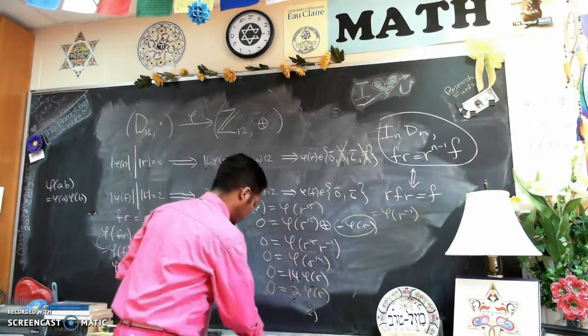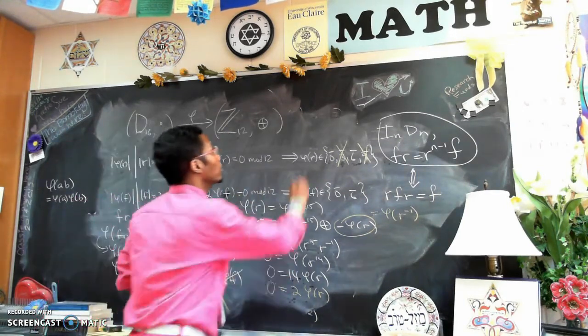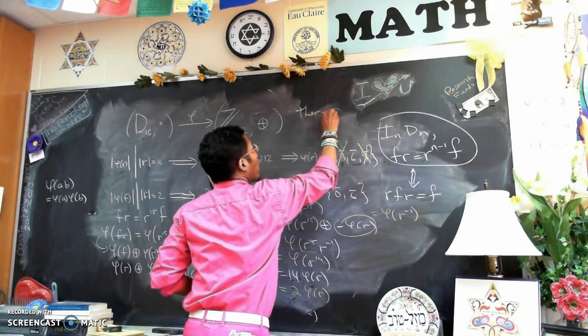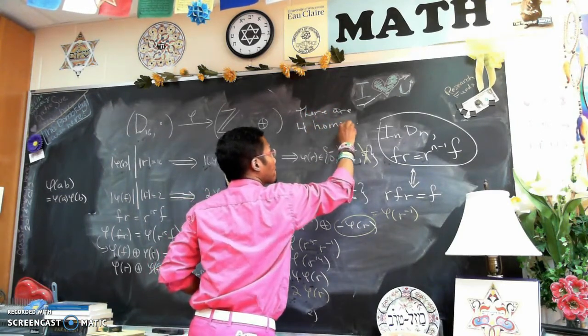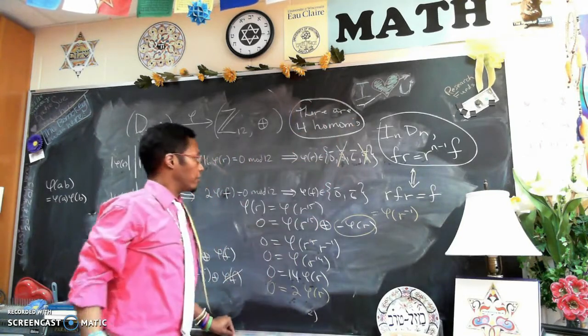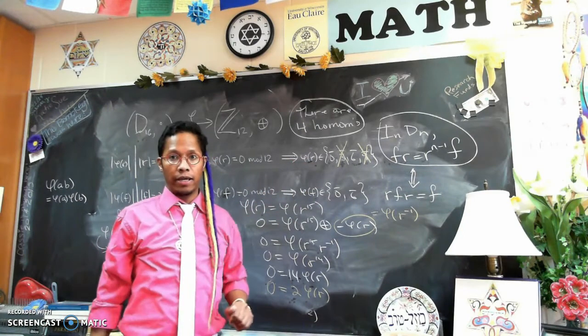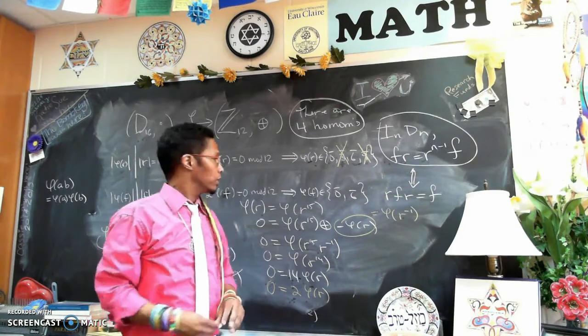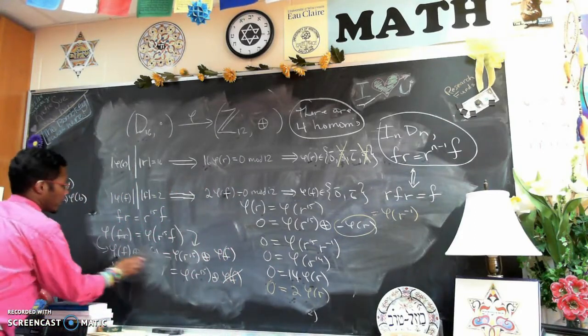So we conclude the answer to this question: How many homomorphisms are there from D16 to Z12? There are four homomorphisms given by the two places we can send R and the two places we can send F. That's the nature of that kind of question.